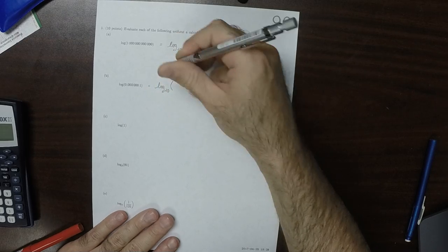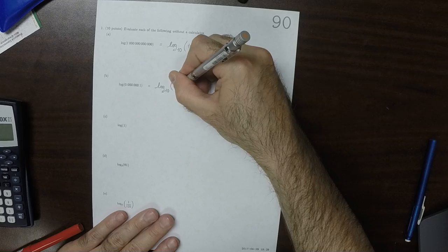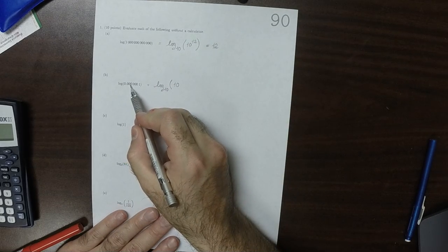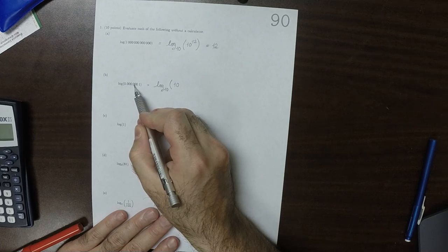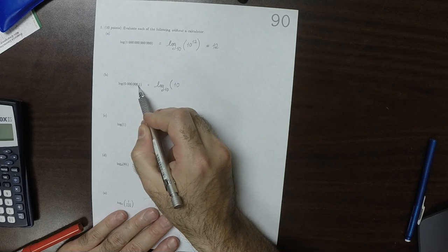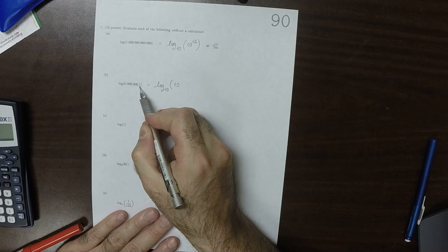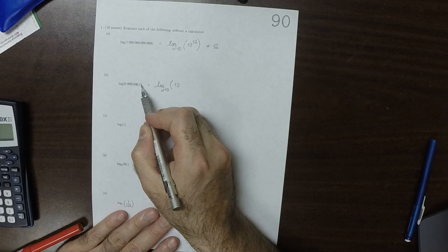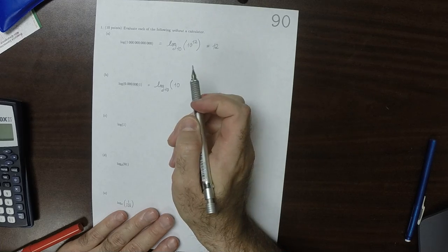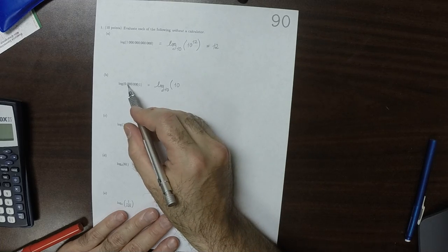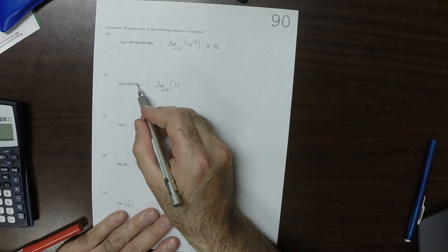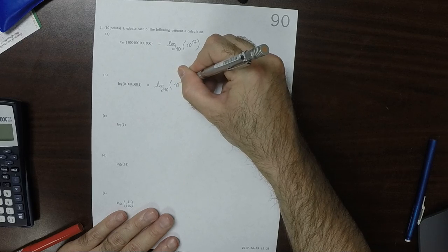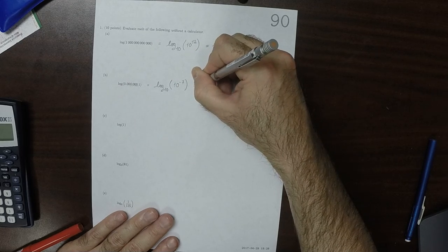This is the log base 10 of 10 to what exponent? So that would be 1, 2, 3, 4, 5, 6, 7. So 1 times 10 to the negative 1, 2, 3, 4, 5, 6, 7. So 10 to negative 7. The answer is negative 7.